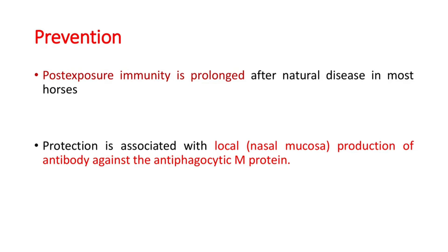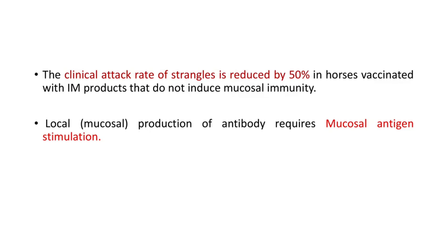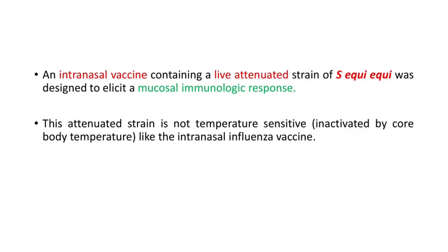Post-exposure immunity is prolonged after natural disease in most horses, and protection is associated with local production of antibody against the antiphagocytic M protein. The clinical attack rate of strangles is reduced by 50% in horses vaccinated with IM products that do not induce mucosal immunity. An intranasal vaccine containing a live attenuated strain of Streptococcus equi equi was designed to elicit a mucosal immunological response; this attenuated strain is not temperature-sensitive and is inactivated by core body temperature.